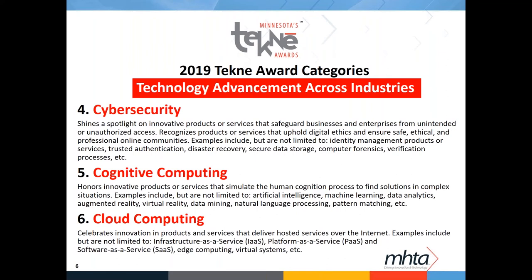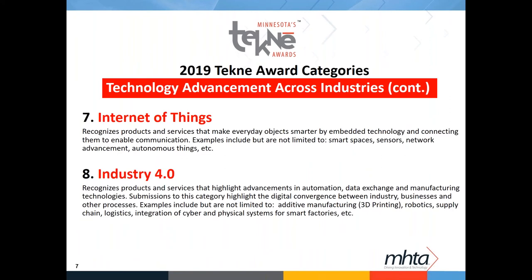The second grouping is technology advancement across industries. Awards in this group recognize technological advancements that span industries to benefit people and organizations around the world. The technologies within these categories are often intertwined with mind-boggling complexity that drives efficiency and exponential growth while safeguarding people in business. What used to be considered science fiction is now reality thanks to many of these advancements. The categories here include cybersecurity, cognitive computing, cloud computing, the Internet of Things, and Industry 4.0.